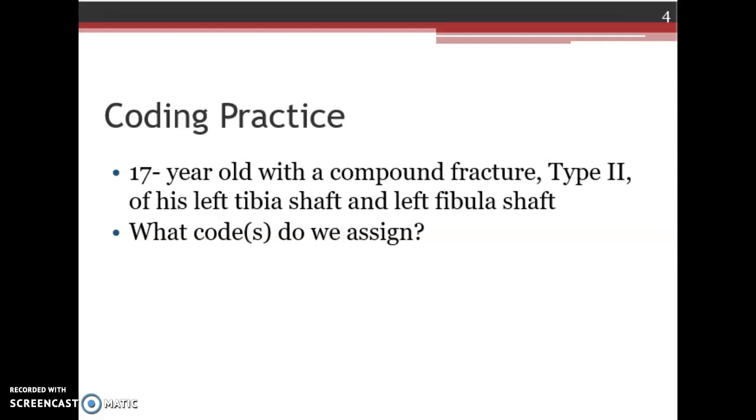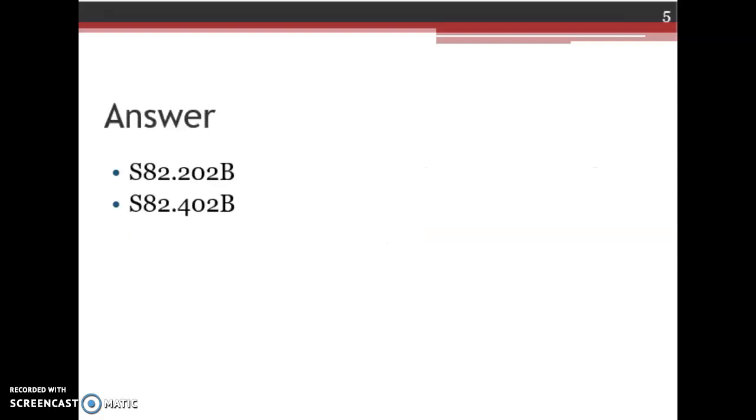Now, we need to code the second fracture, which is the fibula fracture. Go back to F in your index to fracture, then to fibula. You'll see the default for shaft there in parentheses, and beside that, you see S82.40 with the hyphen. Again, go to the tabular to S82.40. We'll see our 6th character is going to be 2 for the left side, and then our 7th character, again, will be B. So, our code for this one is the S82.402B. So, we have two codes, one for each fracture.